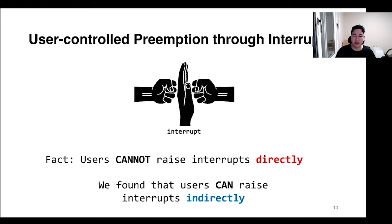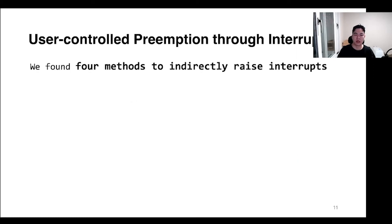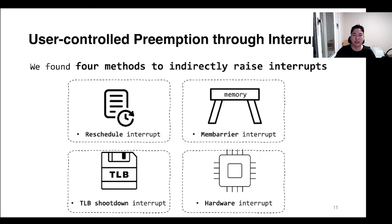Users can send interrupts indirectly by using system calls that send interrupts. We found interrupts which can stop the kernel execution. There are four possible interrupts: reschedule interrupts, memory interrupts, TLB shootdown interrupts, and hardware interrupts. How to use each interrupt is described in the paper.